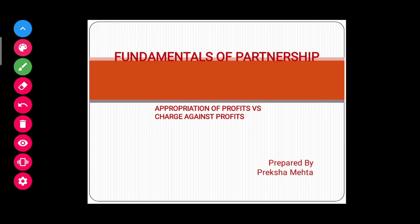Hello students. In the last video we covered the concept format and a few questions on the topic profit and loss appropriation account. Now while recording the transactions of partnership firms, it is very important to distinguish between appropriation of profits and charge against profits. In the profit and loss appropriation account we only record appropriations — we do not record charge against profits in this account.